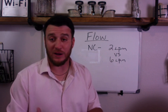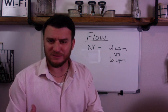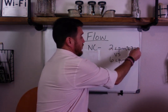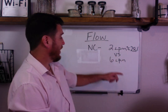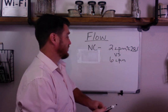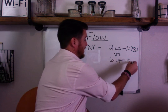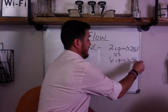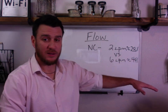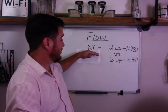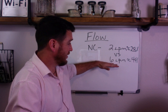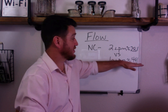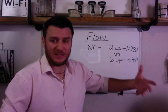Now if we estimate how much FiO2 we're delivering, we know this is variable. But we know that 2 liters per minute is approximately 28%, and 6 liters per minute is approximately 44% — that's 6 times 4 is 24 plus 20. So it makes sense: if you're delivering oxygen through a nasal cannula at 6 liters per minute, that's more oxygen coming out quicker, and it delivers a higher FiO2 to your patient.